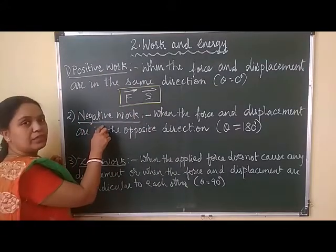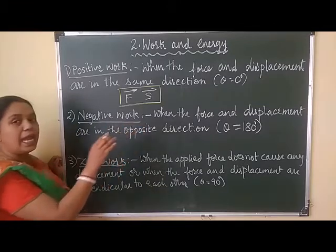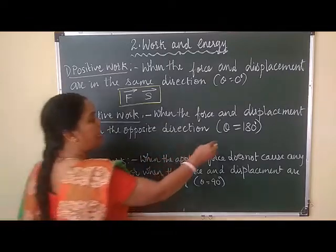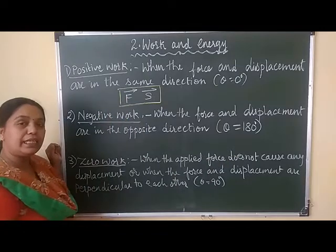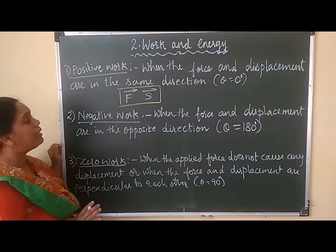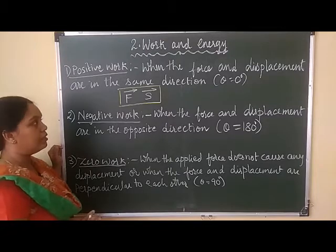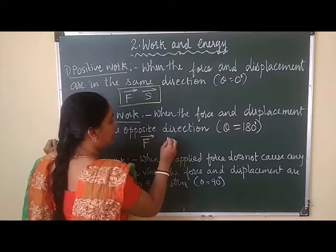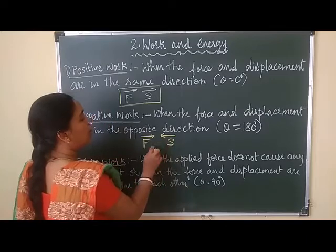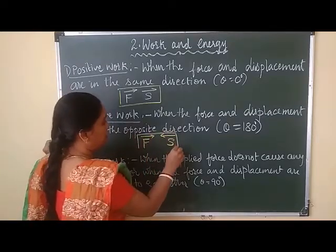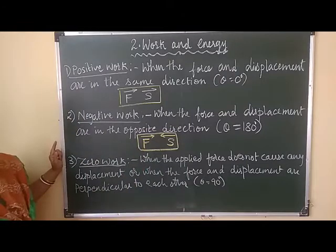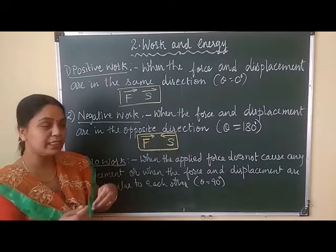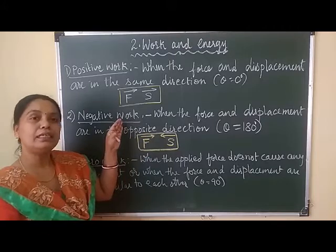Negative work: when the force and displacement are opposite to each other and they are making an angle theta of 180 degrees, then the work done by the applied force is negative work. In this case, the force applied and the direction of displacement are opposite to each other, so this is the condition of negative work.